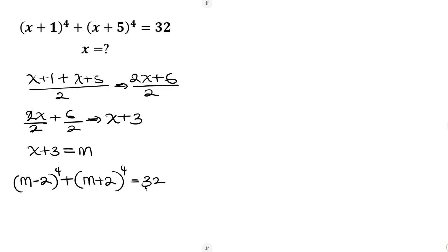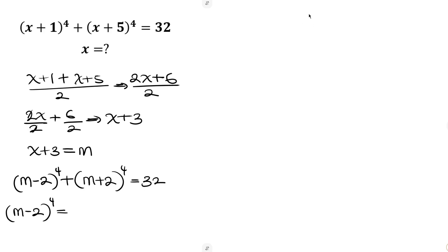The question now looks easy because we have the same terms inside our brackets but with different signs. We're going to expand this one after the other. Let's take (m minus 2) raised to the power of 4 first. A simple way to expand this would be to use Pascal's triangle.